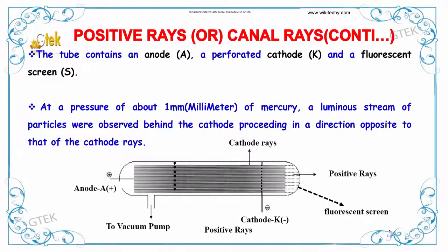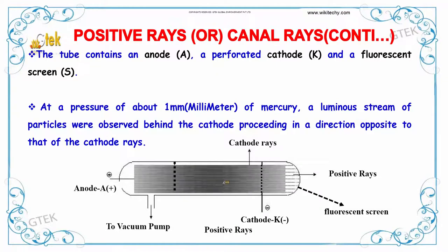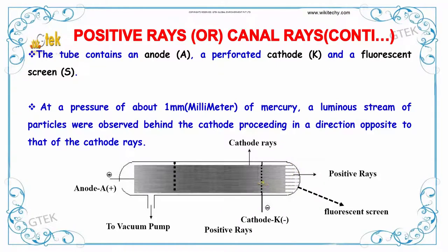The tube contains an anode, a perforated cathode, and a fluorescent screen. At a pressure of about 1 mmHg, a luminous stream of particles was observed behind the cathode, proceeding in a direction opposite to that of the cathode rays. These are referred to as positive rays.